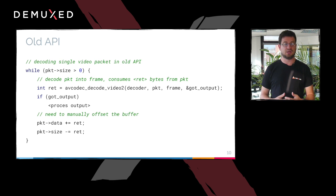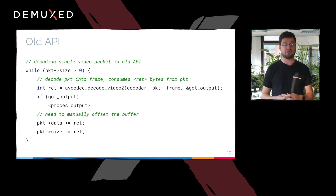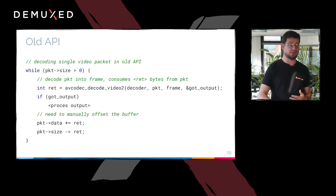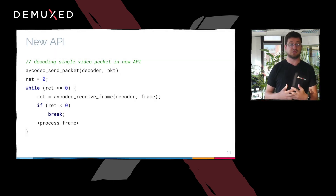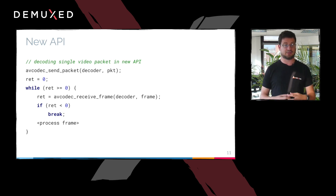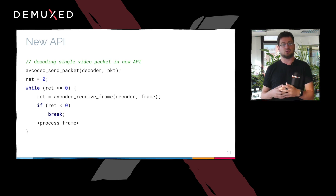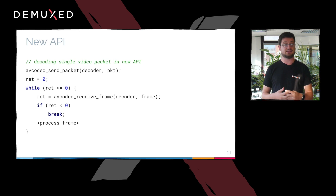To give you an example: this is how you used the decoding API for AVCodec for a long time — a loop using either avcodec_decode_video or decode_audio, processing the output and offsetting the buffer manually. Now, basically you send a packet, which could be audio or video, and then you receive on the AVCodec side. It's of course more complex than that, but this is the new API we're pushing and that will be the default. You should use that one. It will require changes to your application, so please test it now and give us feedback.